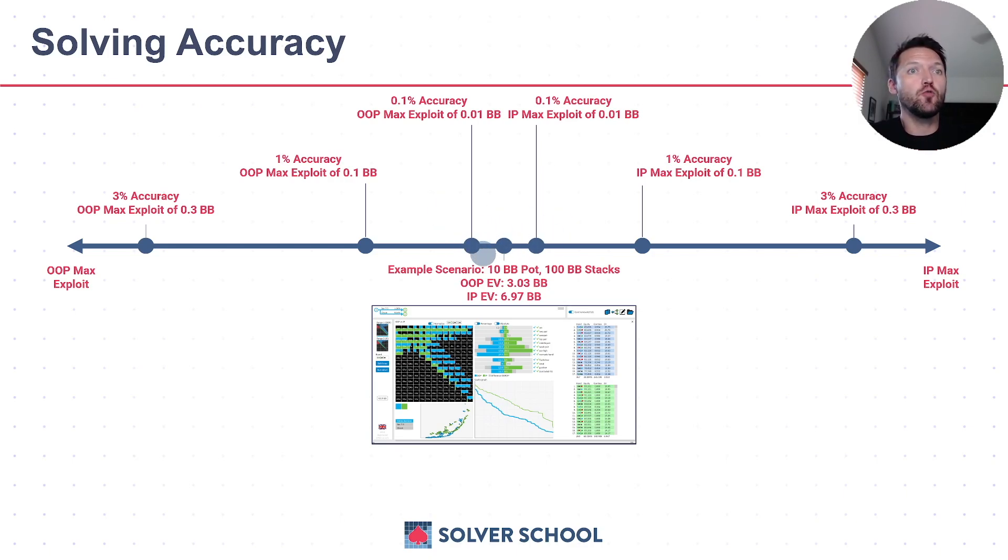Likewise, as you move to a lesser level of accuracy, so this 3% level of accuracy, you're increasing this potential window where equilibrium might lie, but you're also increasing the opportunity to develop counter exploits that can take advantage of either player's strategy.